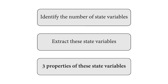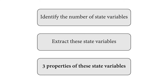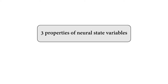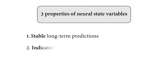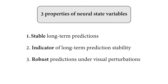Next, we will demonstrate three significant properties offered by these discovered neural state variables for long-term dynamics prediction. Specifically, neural state variables can offer stable long-term predictions, can serve as a novel metric to evaluate the stability of long-term predictions with only visual inputs, and can produce robust predictions under various visual perturbations.